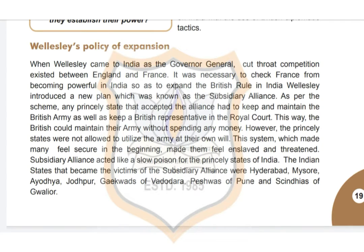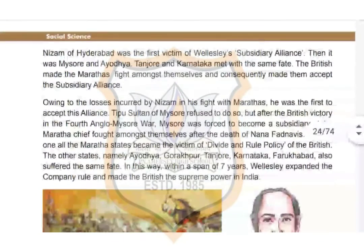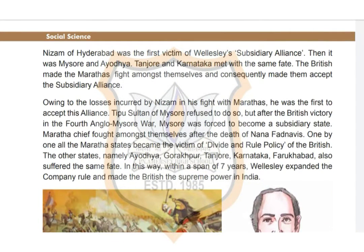The Indian states that became victims of the Subsidiary Alliance were Hyderabad, and the Nizam of Hyderabad was the first victim of Wellesley's Subsidiary Alliance. Students, underline this — the question asked is who became the first victim, and the answer is the Nizam of Hyderabad. Then it was Mysore and Ayodhya. Tanjore and Karnataka met with the same fate. The British made the Marathas fight among themselves and consequently made them accept the Subsidiary Alliance.